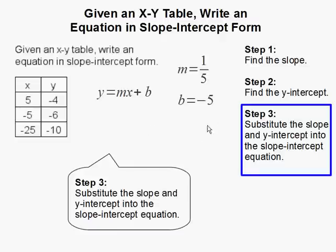Then step 3. Once we have our slope and our y-intercept, all we need to do is substitute them back into the slope-intercept equation. And I'm going to substitute 1 fifth in for m and negative 5 in for b. And I leave the x and y. And that is my slope-intercept equation. And this completes our problem.